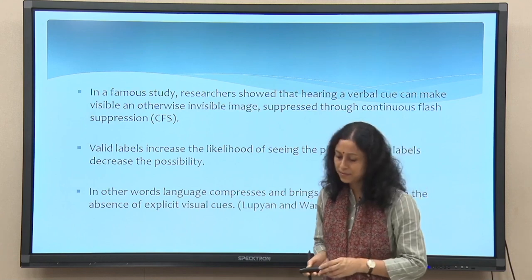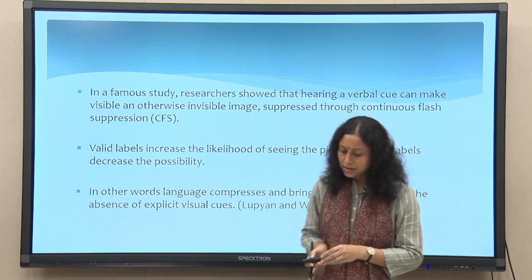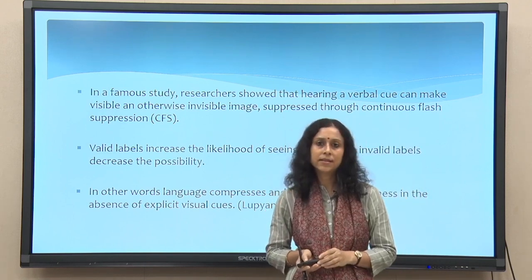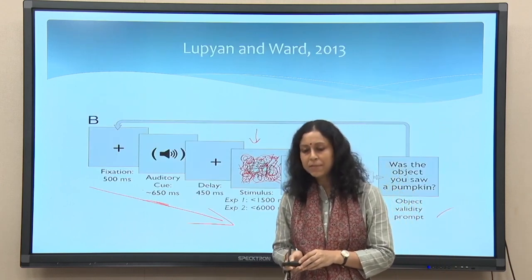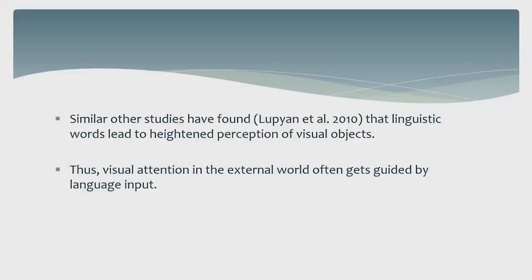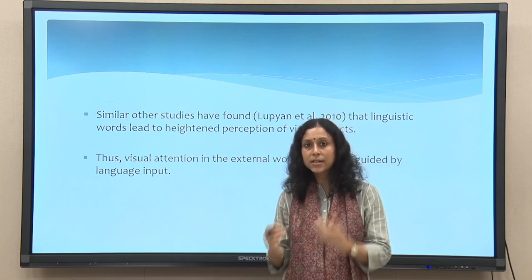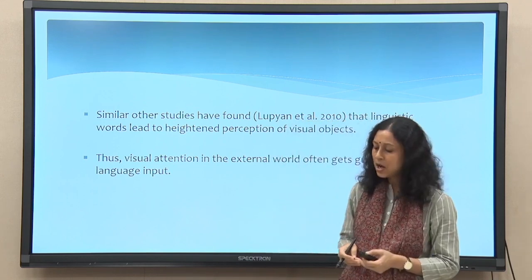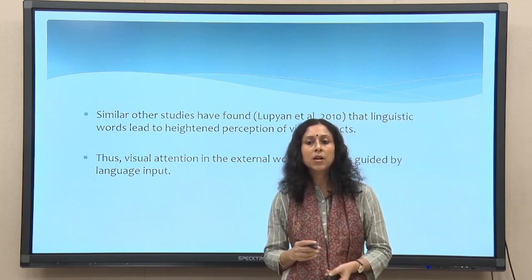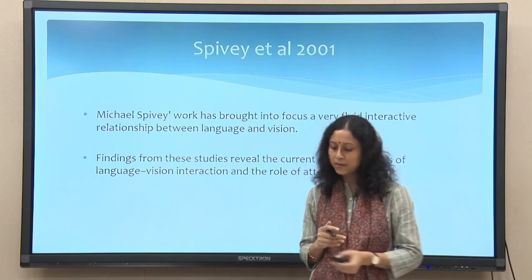The findings were significant: linguistic labels help in visual perception even when the object is visually degraded. At a theoretical level, language brings back awareness in the absence of an explicit visual cue. Importantly, when the invalid cue was given — when the word did not match the visual display — participants also did not identify the object as well. So language can both aid and decrease the possibility of finding a visual cue. Many other studies by the same group found that linguistic words lead to heightened perception of visual objects. Thus visual attention in the external world often gets guided by language input.